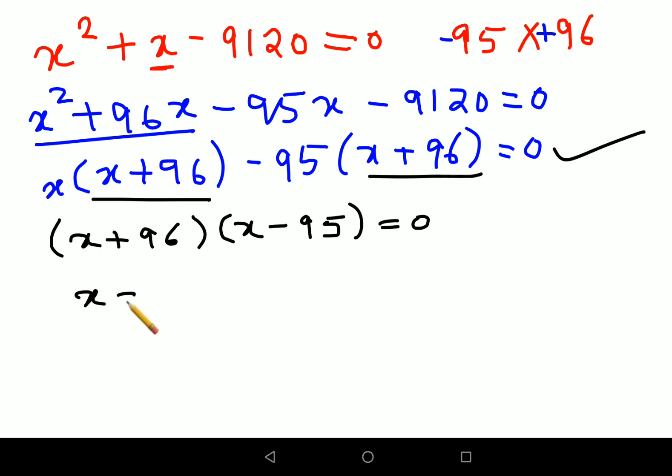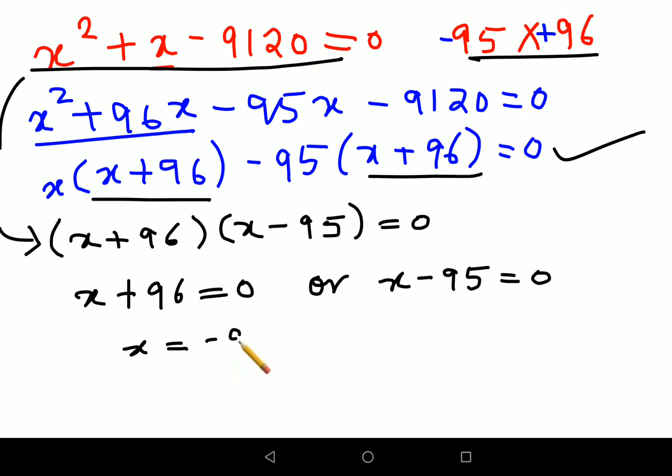Students, please stick around to the end. I will tell you once you figured out the factors how you can directly jump to this particular step. So we have (x - 95) = 0 or (x + 96) = 0. So I can say x = 95 or x = -96.